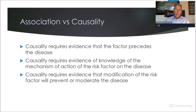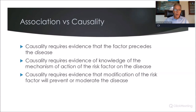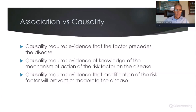We need to be able to distinguish between association and causality. Causality requires evidence that the factor precedes the disease — that a patient had periodontal disease before they had diabetes or cardiovascular disease. Causality also requires knowledge of the mechanism of action — biologic plausibility: how does periodontal disease impact diabetes? There has to be a physiologic chain of events. And causality requires evidence that modifying the risk factor will prevent or moderate the disease. If we treat periodontal disease and control it and that has no impact on the systemic medical condition, causality is not as likely — it's simply an association.